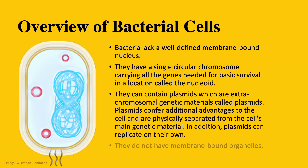Before we get into the differences, let's briefly look at what bacterial cells are like. Bacteria lack a well-defined membrane-bound nucleus. They have a single circular chromosome carrying all the genes they need for basic survival. This single circular chromosome is located in a place in the cell called the nucleoid. They can contain plasmids as well. These are extra-chromosomal genetic materials that confer additional advantages to the cell. They are physically separate from the cell's main genetic material and can replicate on their own.